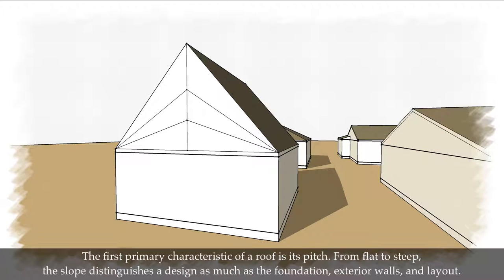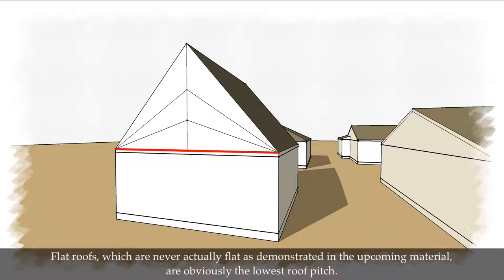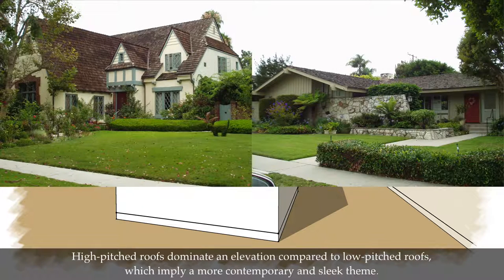The first primary characteristic of a roof is its pitch. From flat to steep, the slope distinguishes a design as much as the foundation, exterior walls, and layout. Flat roofs, which are never actually flat as demonstrated in the upcoming material, are obviously the lowest roof pitch. High-pitched roofs dominate an elevation compared to low-pitched roofs, which imply a more contemporary and sleek theme.